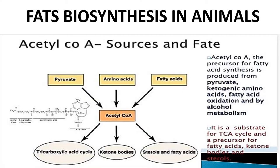Fatty acid biosynthesis in animals starts from acetyl-CoA. This acetyl-CoA, which is the precursor for fatty acid synthesis, is produced by pyruvate, ketogenic amino acids, fatty acid oxidation, and alcohol metabolism. It acts as a substrate for the TCA cycle, ketone bodies, steroids, and fatty acid synthesis.